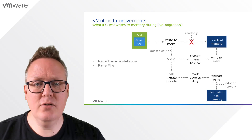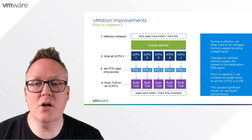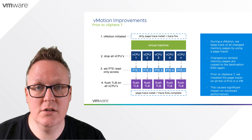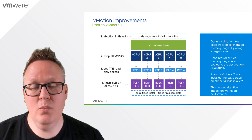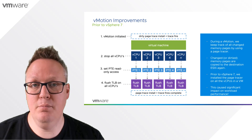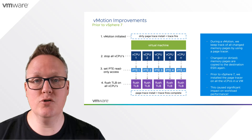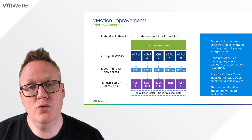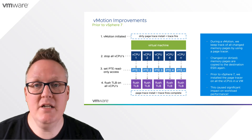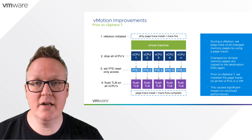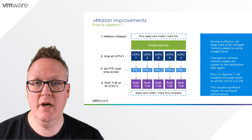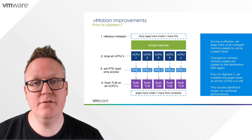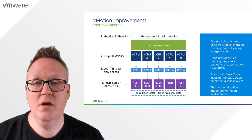In versions prior to vSphere 7, we need to install that page tracer on each and every vCPU that is configured for that specific virtual machine — stopping each one, taking only microseconds. But depending on the number of vCPUs configured for a virtual machine, this could lead to serious performance impact. All the vCPUs are setting the PTEs — the page table entries, basically the memory pages — to read-only access. We need to stop the vCPUs, again microseconds at a time, for the page tracer installation but also for all the page firing happening for specific page tables on a vCPU.